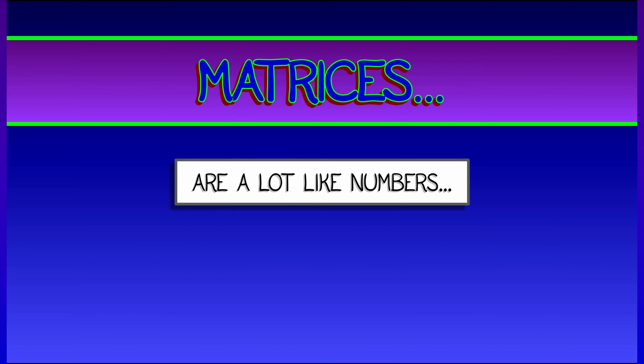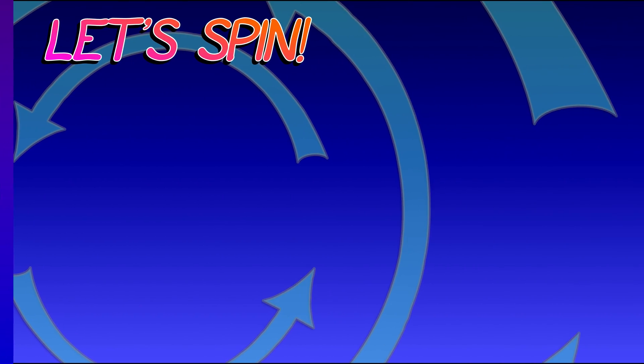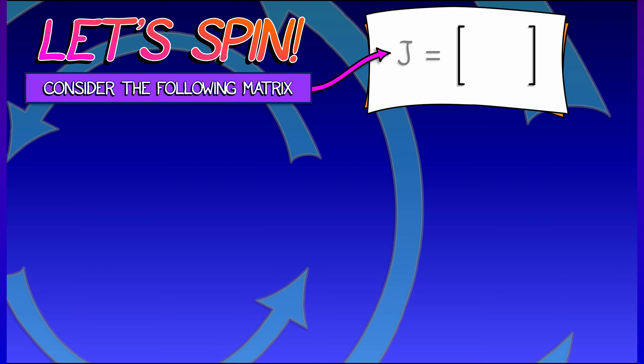Now, matrices are a lot like numbers, and like numbers, they can surprise you. Here's a simple example of a surprising matrix. This matrix, let's call him J, is a 2x2 matrix friend of mine,